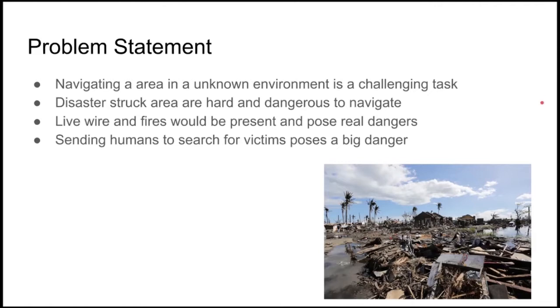Some examples of where there's an unknown environment and navigating an area where a robot would be useful would be places like a disaster struck area. Since these are hard and dangerous to navigate because of live wire and fires, it poses a real danger to humans who like to search for victims.